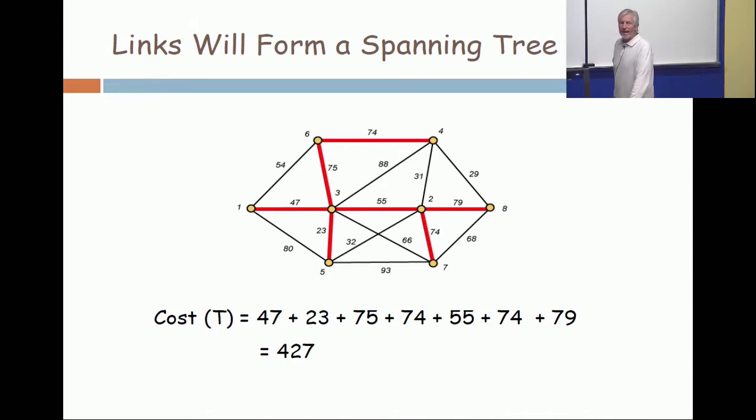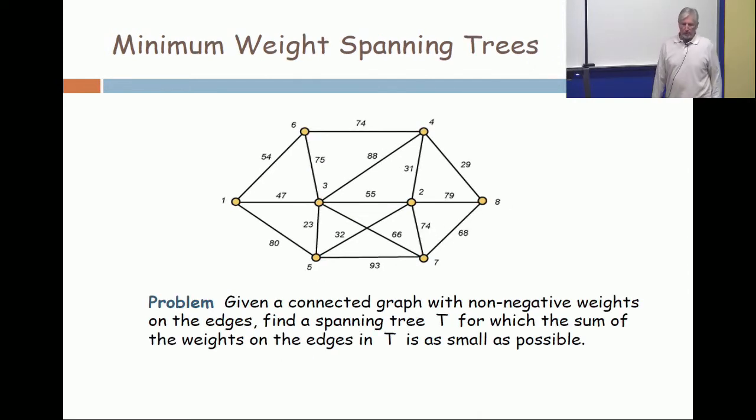It will be a subgraph which is a tree. It will have no cycles in it. And all vertices will be incident with edges in the tree. It's a pretty obvious statement. So mathematically, the problem is just simply, given a connected graph with non-negative weights on the edges, find a minimum weight spanning tree. Find a spanning tree for which the sum of the weights on the edges is as small as possible.